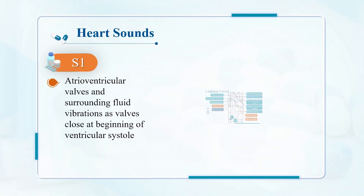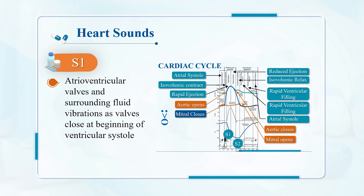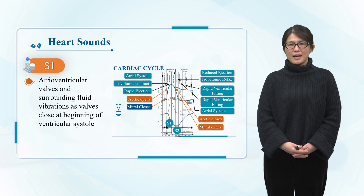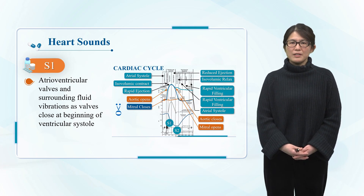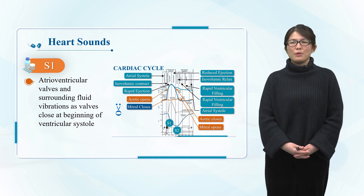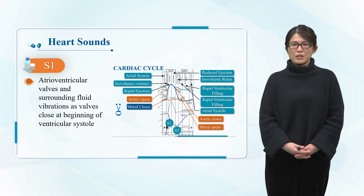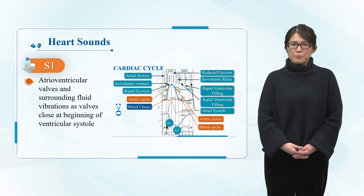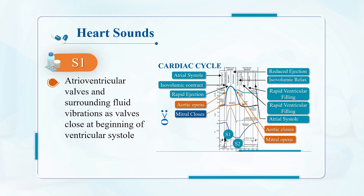The first heart sound marks the beginning of ventricular contraction. It is most clearly heard at the cardiac apex. It is characterized by a low pitch and longer duration. The first heart sound is caused by the sudden closing of the atrioventricular valve, causing vibration of the blood and the wall of the ventricle, as well as vibration of the wall of the large blood vessels.